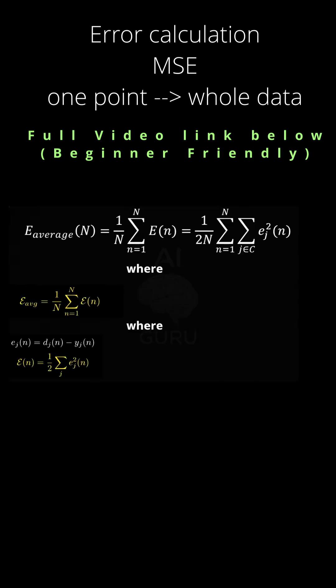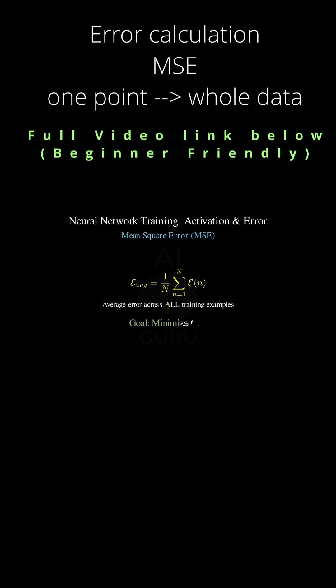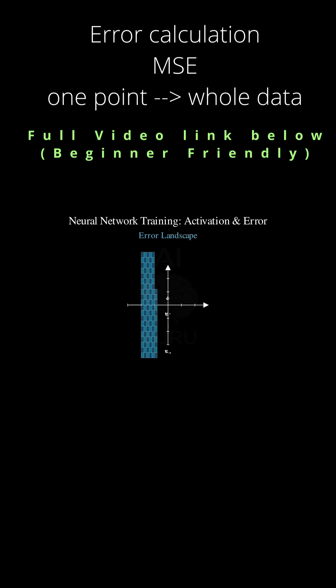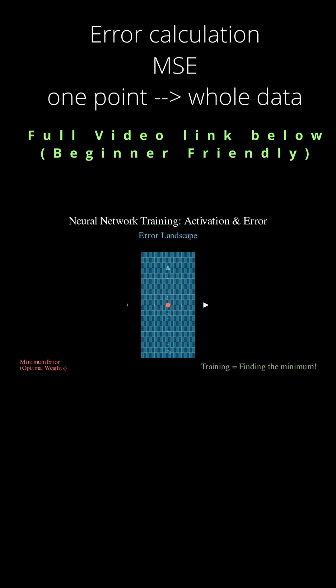This average error is now a single number that tells us how good or bad the network is - the target we're trying to drive down to zero. Crucially, this average error is a function of all the adjustable synaptic weights in the entire network. Finding the minimum of this function is the same as finding the best possible set of weights. So how do we decide when to adjust those weights based on the error? Two main methods.